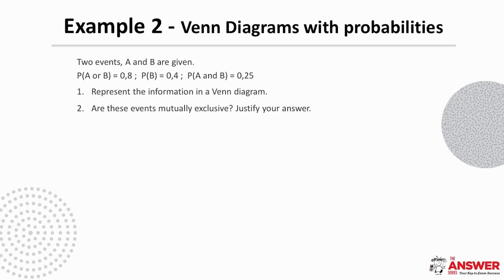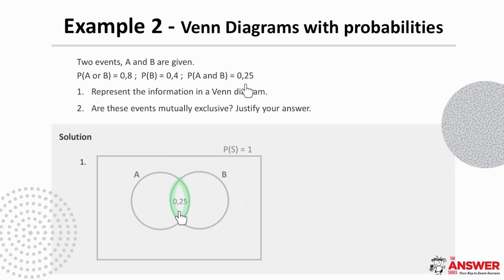We start by creating our sample space and making the probability of the sample space 1 and we fill in our two events. Then we can start by filling in the overlap here of 0.25. Then we know the probability of the whole of B is 0.4 which means we need to subtract the overlap to get 0.15 here for B only.